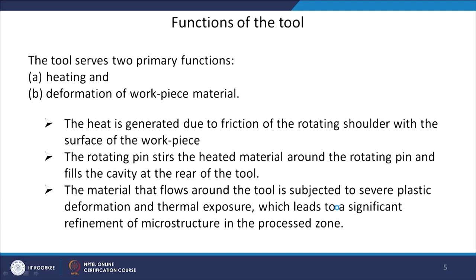The function of the tool serves primarily two purposes: heating and deformation. Heating is primarily through friction between the shoulder and the workpiece surface. Deformation is primarily through the rotating pin, though the shoulder also contributes to some part of the deformation. Heat is generated due to friction of the rotating shoulder with the workpiece surface, and the rotating pin stirs the heated material around itself, filling the cavity at the rear of the tool.